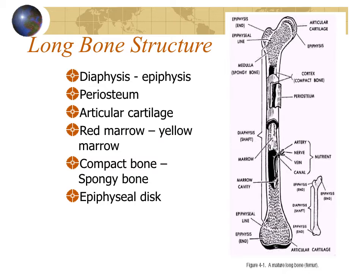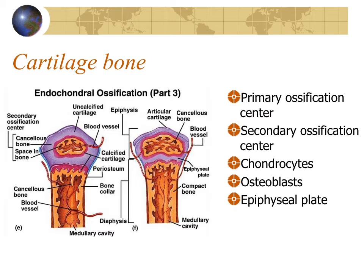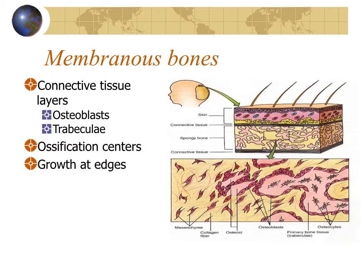Growth in length occurs at the epiphyseal disc, which eventually is replaced by an epiphyseal line. In cartilage bones, formation happens with primary and secondary ossification centers — the bone is first formed as a cartilage model, then osteoblasts replace the cartilage, leaving an epiphyseal plate where growth continues. Membrane bones form differently in the embryo; they form in a connective tissue layer below the skin, where osteoblasts initially form trabeculae of spongy bone, and then compact bone is deposited around the edges.